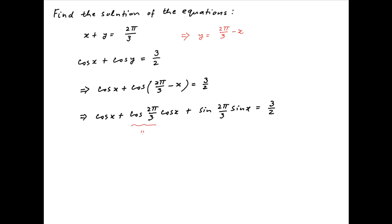Now cos(2π/3) is equal to cos(π minus π/3), which is equal to minus cos(π/3), which is equal to minus 1/2.